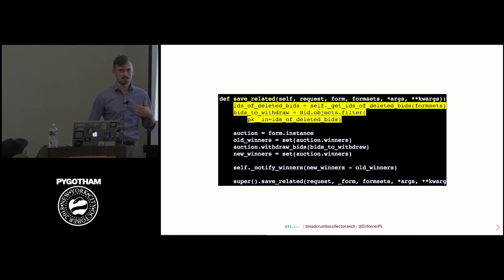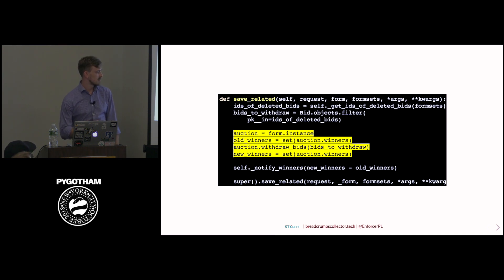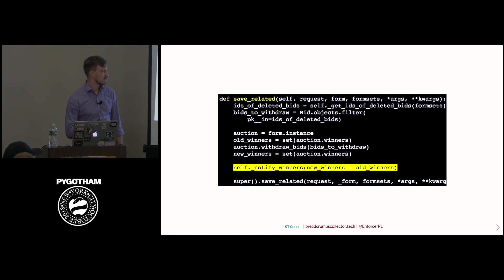But luckily, Django has this notion of putting your hooks in many different situations so you can customize this operation. So there is a save_related method where you can write your custom code. And please don't read the code. I will be just describing what highlighted areas do. So first, we parse which checkboxes were checked and select bids from the database. Then we use a method, withdraw_bids, on the auction. For example, we have a winner and we withdraw this bid because it's inappropriate or something like that, and the current price of the auction changes. So I cannot just delete a bid without affecting the auctions. This is the whole point. And in the end, I notify new winners if there are some.